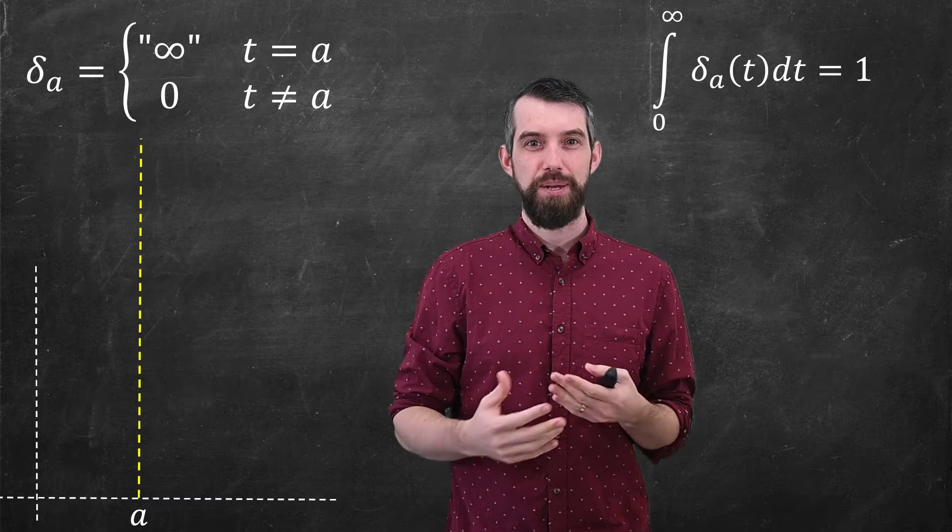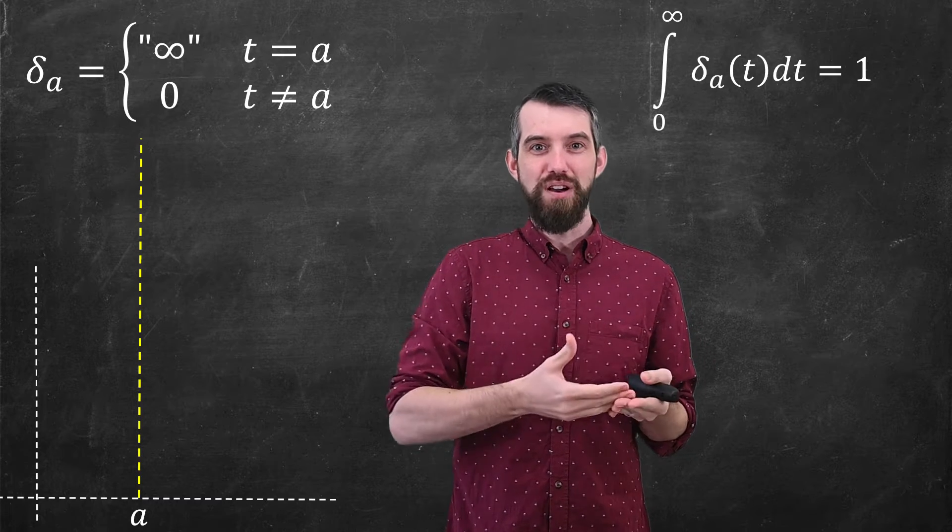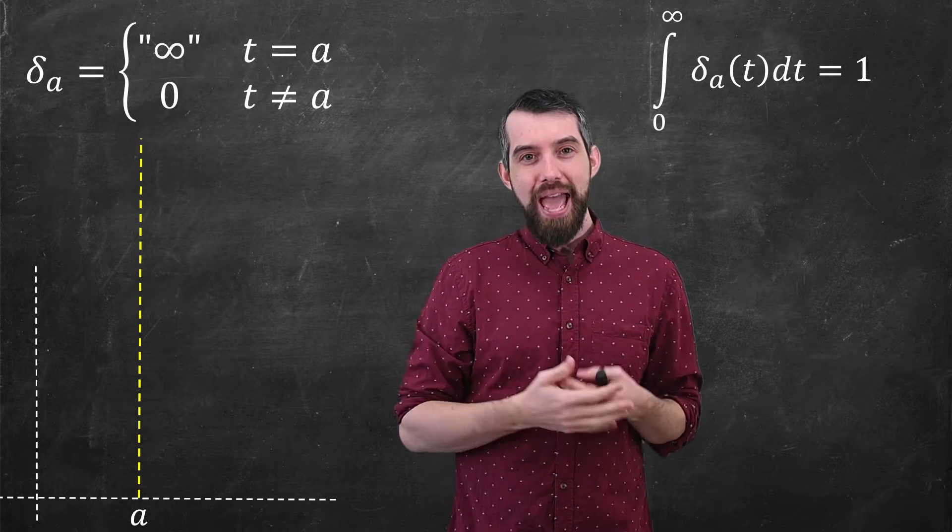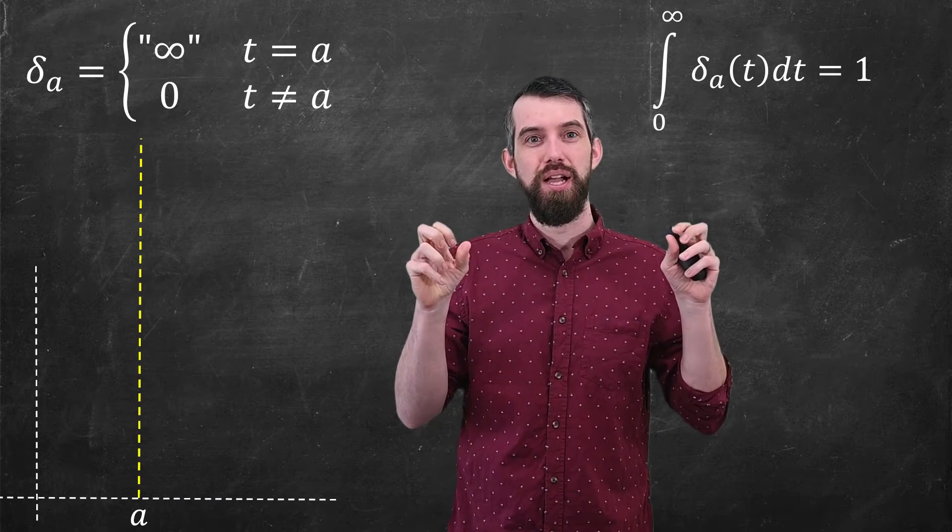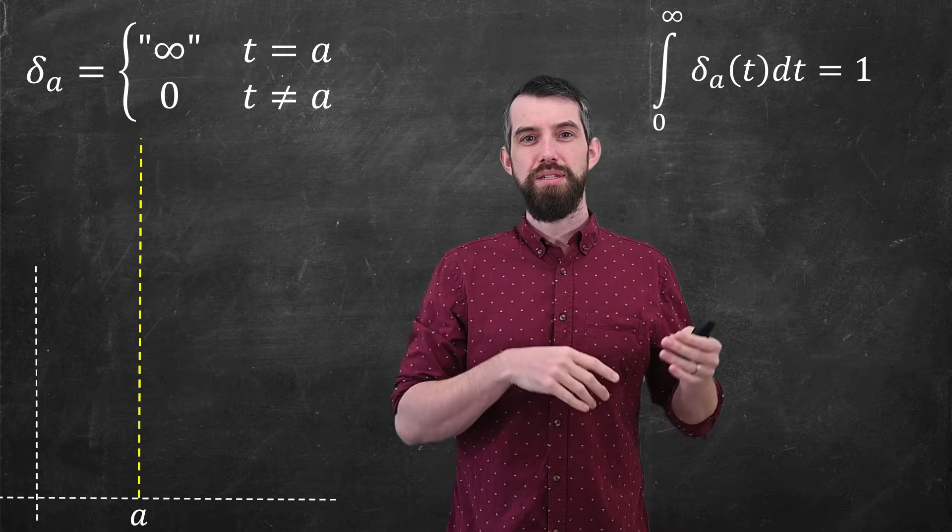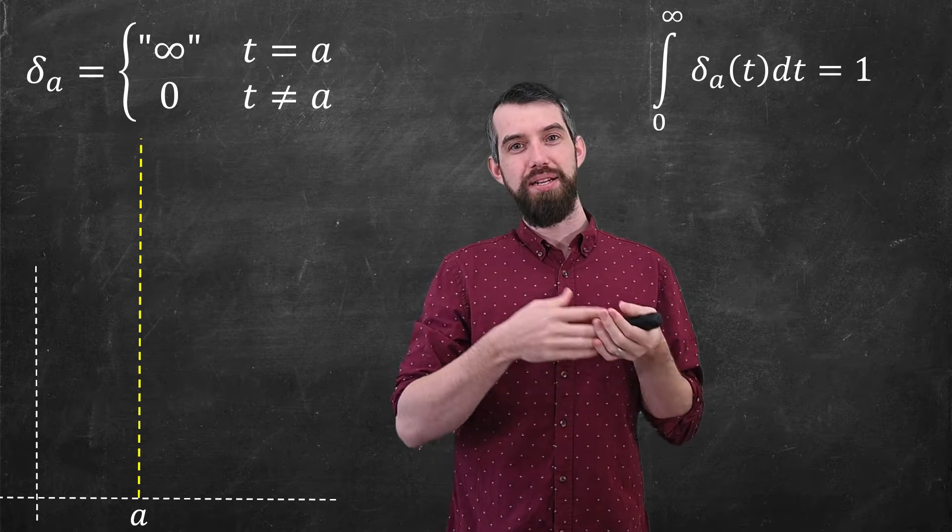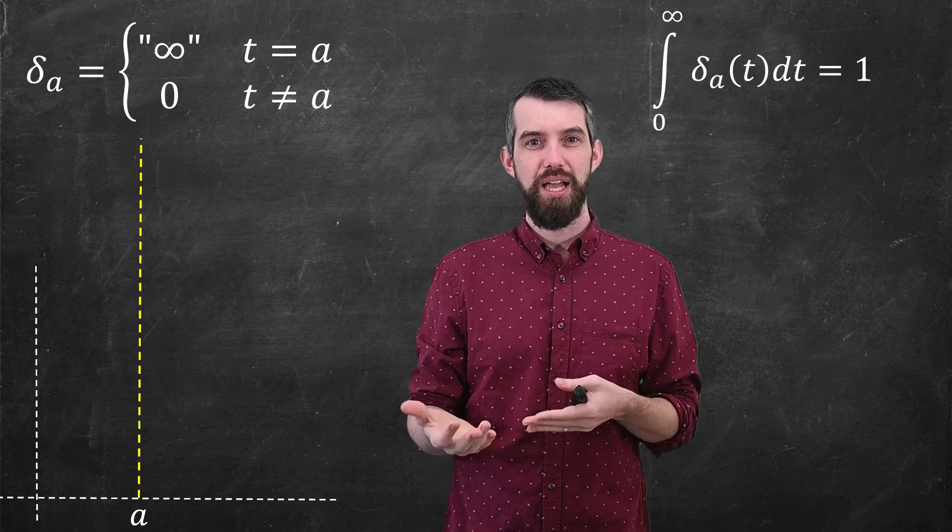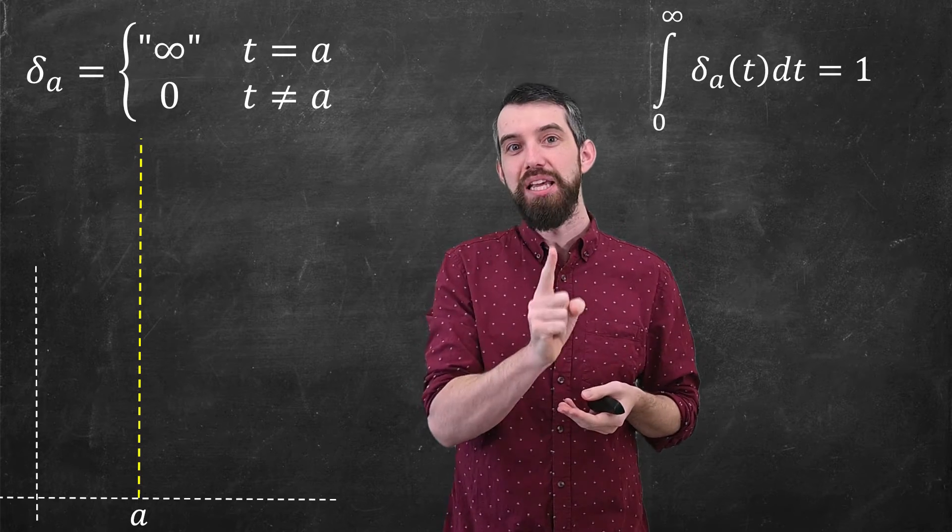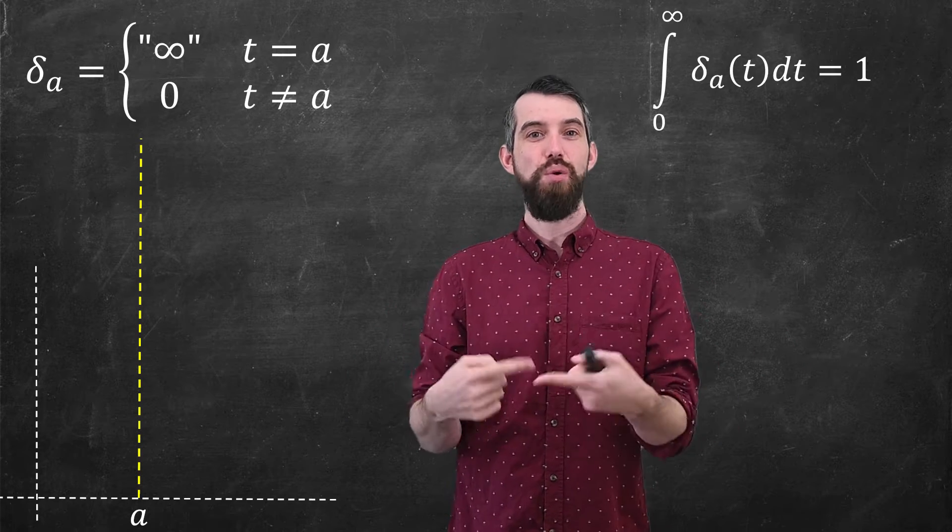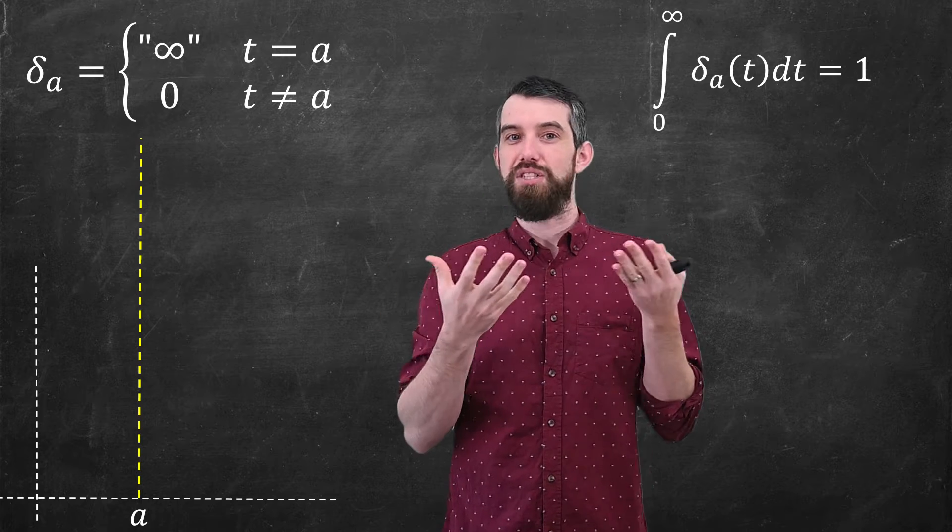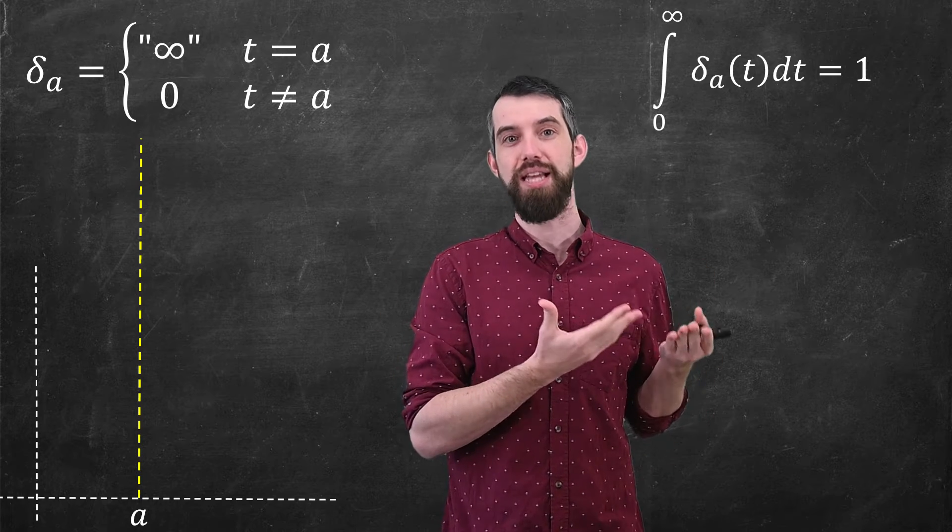Now, what is this object? It's not really a function because the function value at a is not some number, which is necessary to be a function. But we can call it a generalized function, or sometimes this is called a distribution, if one wants to think of it from a more probabilistic perspective. And my goal here is not to try to delve too deeply into what this object really is, but I just want to imagine it as something that's zero everywhere and then has an infinite spike specifically at the value of a and additionally has the property that when you integrate it out, it's going to be equal to one. In a sense, we are going to define this so-called generalized function so that it has this nice integral property.